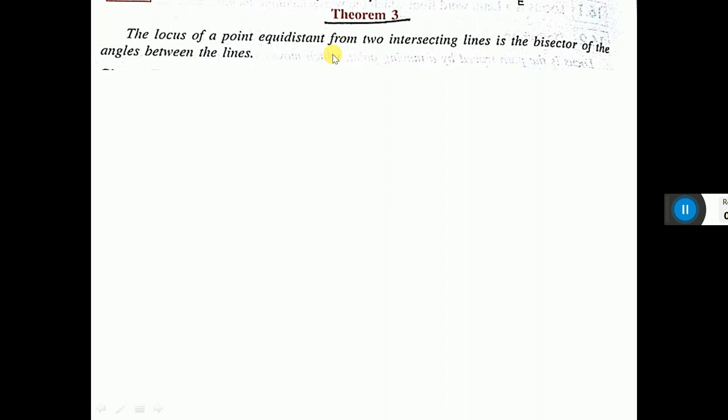Class 10 students, now I will do locus. The locus of a point equidistant from two intersecting lines is the bisector of the angles between the lines. This is the theorem of locus.